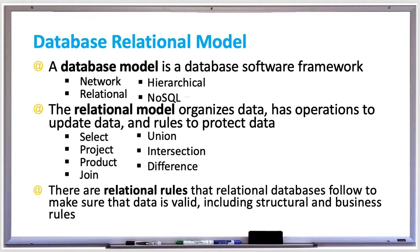Relational operations include: select, which selects a subset of rows from a table; project or projection, which removes one or more columns from a table; product, which lists all possible combinations of rows between two tables; join, which is a product operation followed by a select operation; union, which combines two tables by selecting all rows from both; intersect, which selects only rows common in both tables; and difference, which selects rows that appear in only one of the tables.